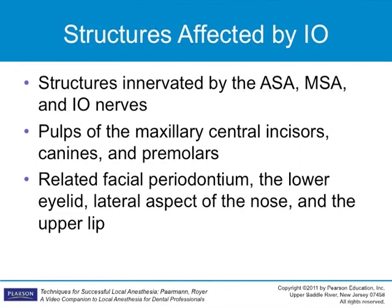The infraorbital injection anesthetizes the same structures innervated by both the ASA and MSA: pulpal and osseous tissues, periodontal ligaments, and facial gingiva of the maxillary anteriors and premolars, in addition to the infraorbital nerve's terminal branches, which supply the lower eyelid, skin on the lateral aspect of the nose, and the skin and mucous membrane of the upper lip.